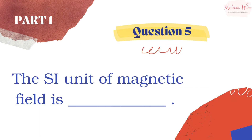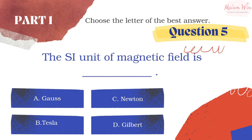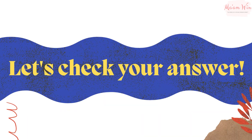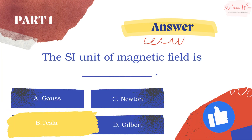Question number five: the SI unit of a magnetic field is blank. Choose the letter of the best answer. Let's check your answer — the right answer is letter B, tesla.